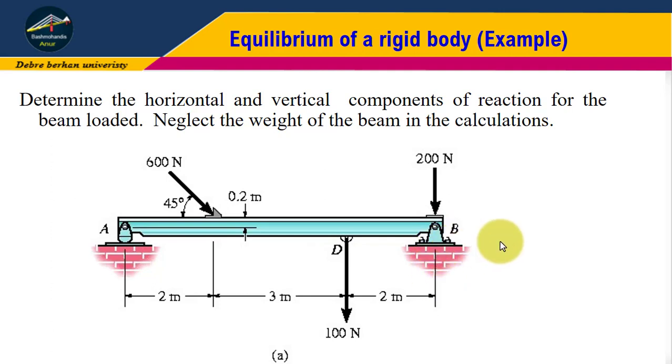At point B there is a 200 Newton downward force. At point D there is a 100 Newton downward force. Here we have a 600 Newton inclined concentrated force where the degree of inclination is 45 degrees. The dimensions are given.